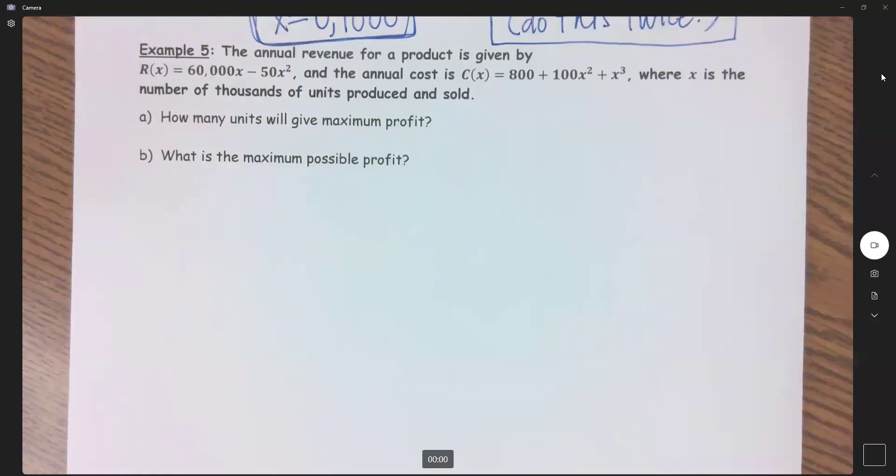Example five says the annual revenue for a product is given by R(x) and the annual cost is C(x), where x is the number of thousands of units produced and sold. Part a wants to know how many units will give maximum profit and what is the maximum possible profit.